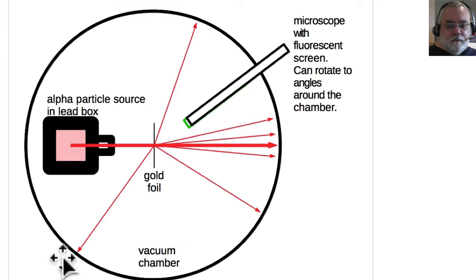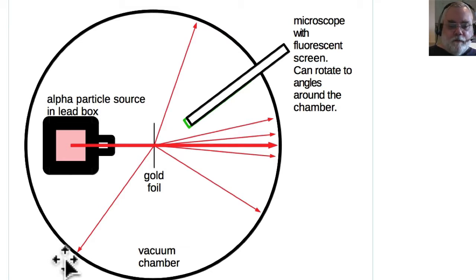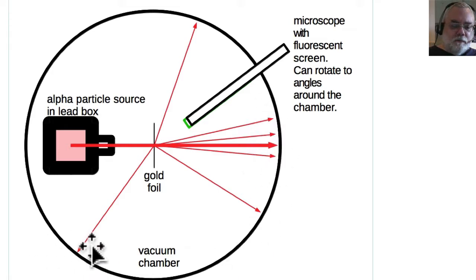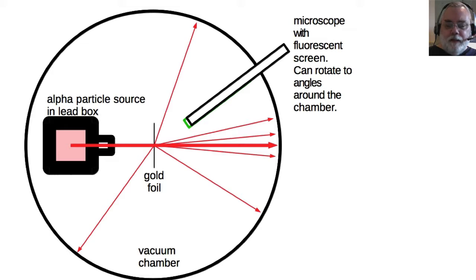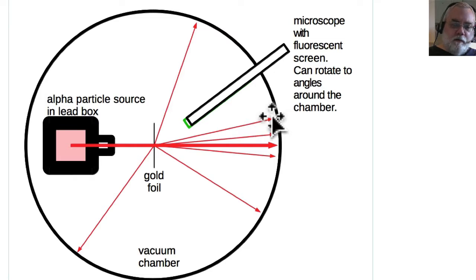Rutherford said this is like firing a 15-inch naval battleship shell at a piece of tissue paper and having it bounce back — it was that surprising. It was Rutherford who had the insight to look for back-scattering: the original experiments only looked near the forward direction, but when Rutherford saw deflections he said let's look broader, and then let's even look for bounce-backs. He had the insight to look further and for a long time, and there were some.